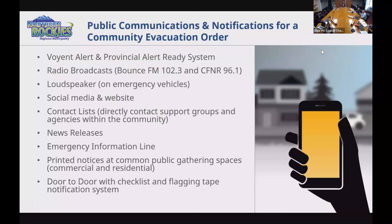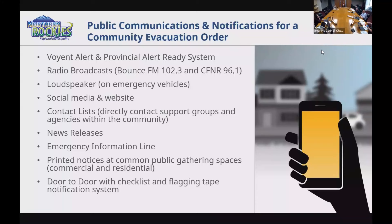To communicate a community evacuation order, we use many of the same sources as the alert but add a few. All alert systems, radios, loudspeakers on emergency vehicles driving through neighborhoods, social media and website, news releases, our emergency information line, and public notices — but for an order we absolutely do a door-to-door system. When doing door-to-door evacuation notice, door knockers go out with a set of flagging tapes that are color-coordinated and printed with a notice.